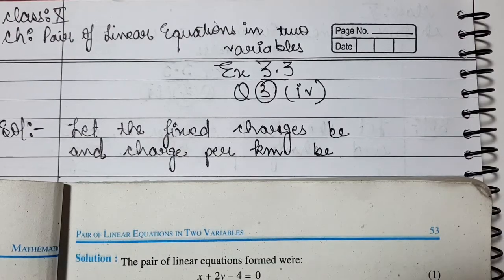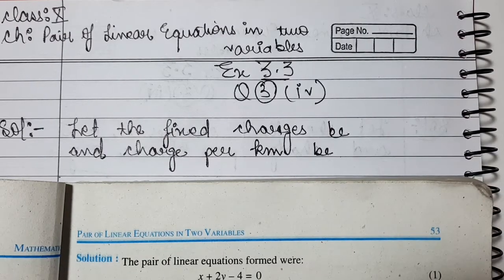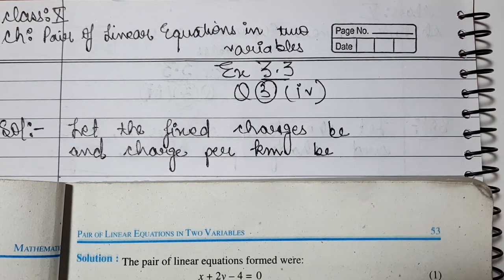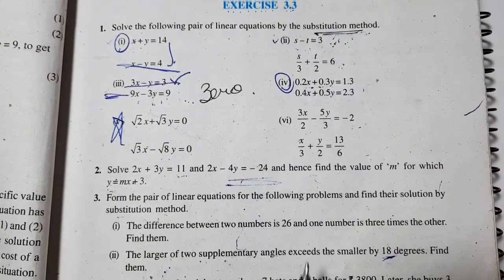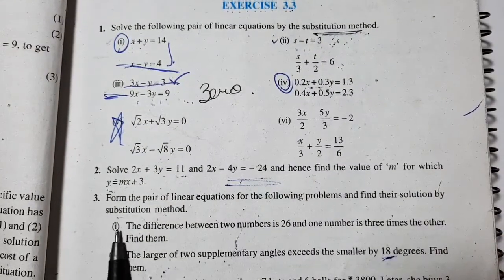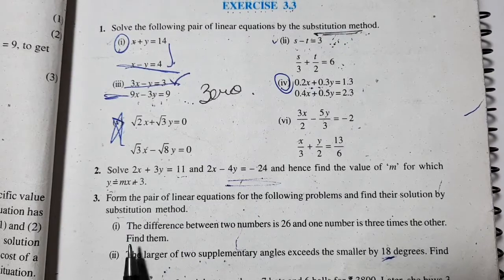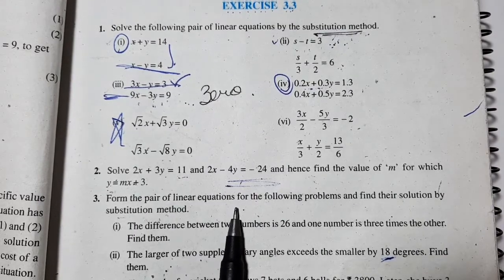Hi everyone, welcome to my YouTube channel Raminder Maths Hub. I am Raminder. Today we are doing Exercise 3.3, third question, fourth part. The question is: form the pair of linear equations for the following problems and find their solution by substitution method.